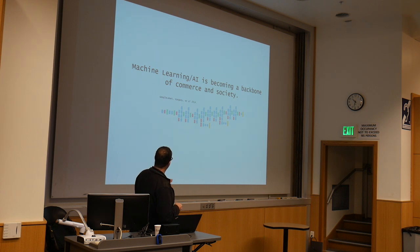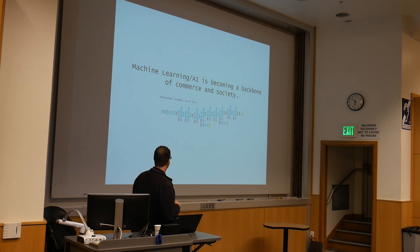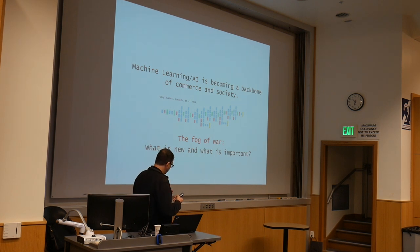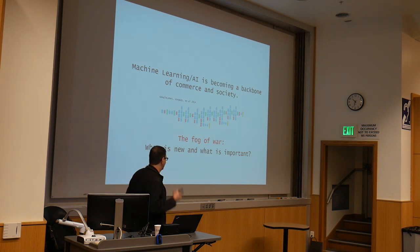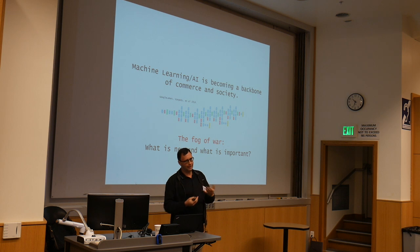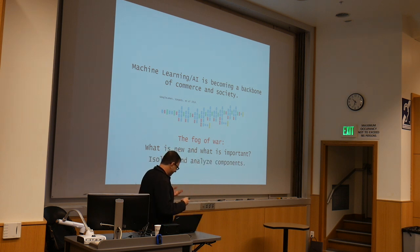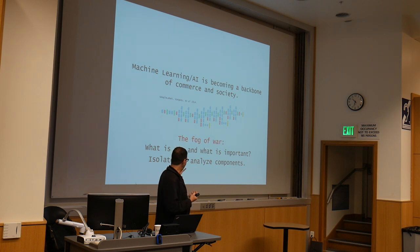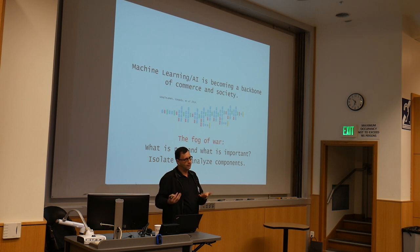How can we understand something like that? We probably cannot understand this thing specifically — it's just too complex. And maybe some of the complexities are necessary. On one hand, we get this amazing result. On the other hand, there is this kind of fog of war, where in the excitement of progress, we may not be able to identify things which are really key. As scientists, we need to isolate and analyze components of what contributes to the success of modern machine learning. That way we can make progress.